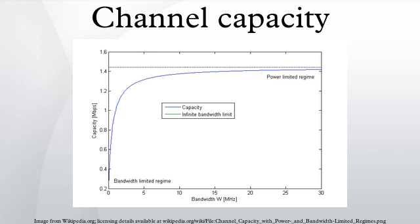Formal Definition: Let n be the random variables representing the input and output of the channel, respectively. Let be the conditional distribution function of given, which is an inherent fixed property of the communications channel. Then the choice of the marginal distribution completely determines the joint distribution due to the identity, which in turn induces a mutual information.